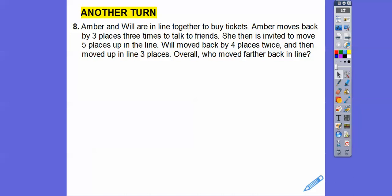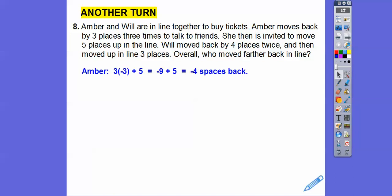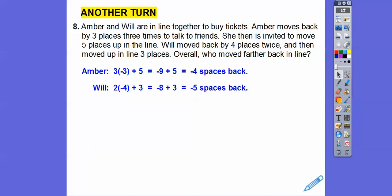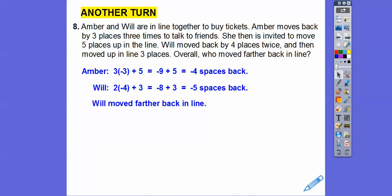Amber and Will are in line to buy tickets. Amber moves back three places three times — three times negative three — and then moves five spaces up, so plus five. Will moves back four places twice — two times negative four — and then goes up three places, so plus three. Who moved farther back? Amber: three times negative three is negative 9, plus 5 is negative 4. Will: two times negative four is negative 8, plus 3 is negative 5. Will moved further back — five spaces versus Amber's four.